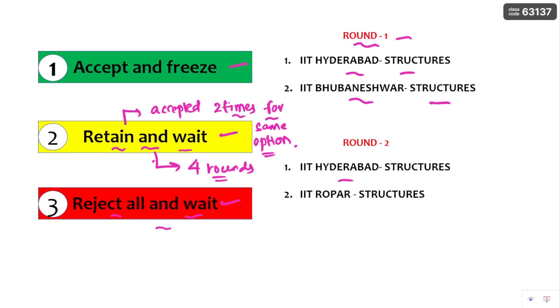In the third time, you don't have the option for the same option to keep retain and wait. Also, this retain and wait is available for the first four rounds only. After the fifth round and additional rounds, it is not at all available for you.